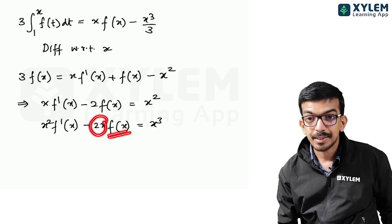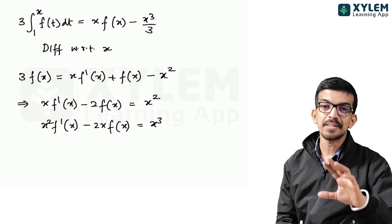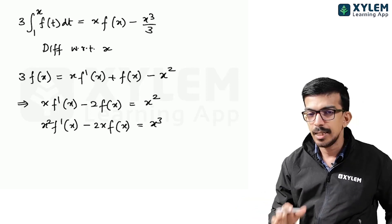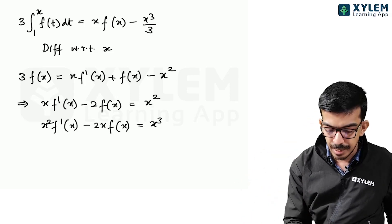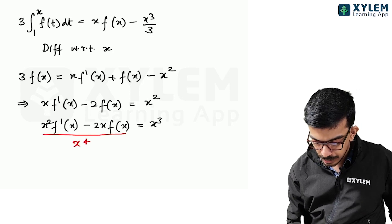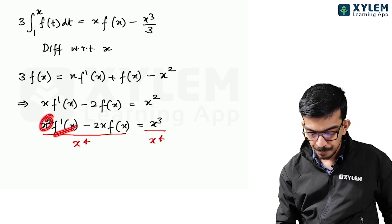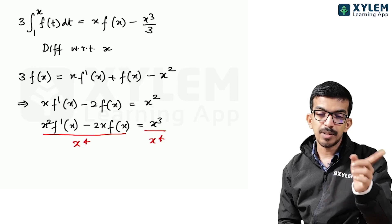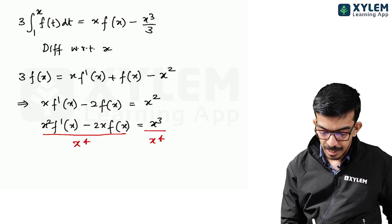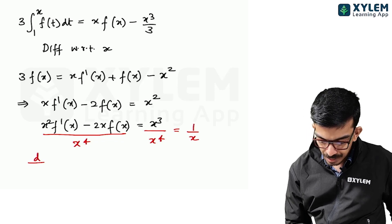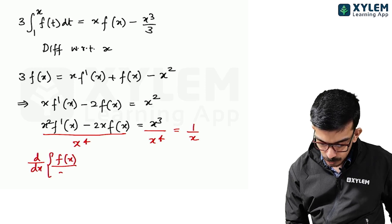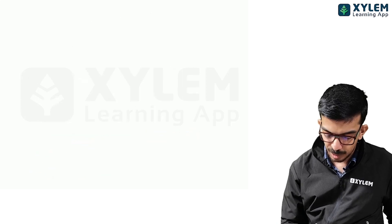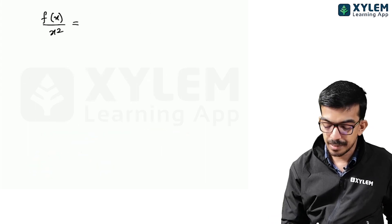This is a linear differential equation. Dividing through by x², we observe it becomes a perfect differential. Using the quotient rule, the left-hand side becomes d/dx of [f(x)/x²], and the right-hand side is 1/x.